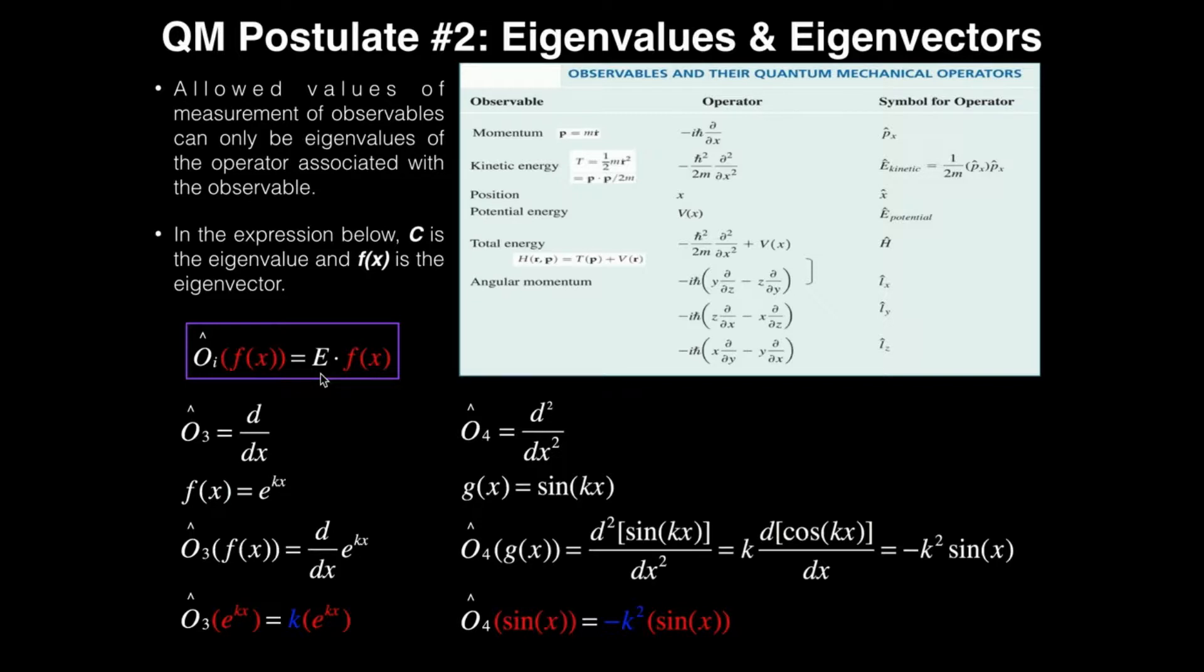This is getting into some complicated math, but I'm hopefully going to simplify this with an example of what this actually means. I want you to notice, before I go into the example, that after we do the operation, notice that on both sides we have exactly f(x). For example, if f(x) was sine of x, in order for this E to be a valid measurement of the observable, I would have to have sine of x over here and exactly sine of x over here. So bear that in mind and let's look at an example.